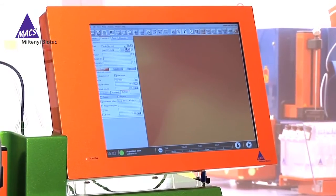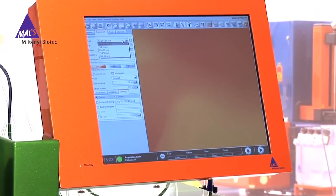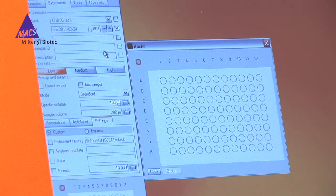First, go to the Rack tab on the screen. From the drop-down menu, choose your preferred type of chill rack.